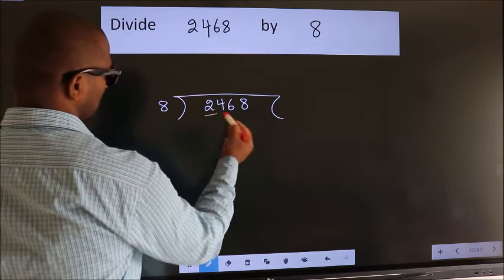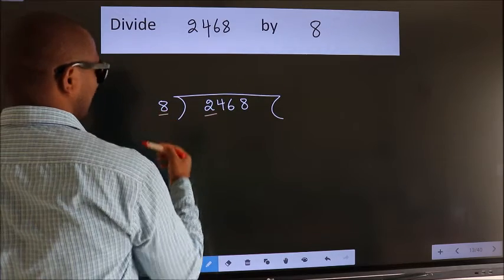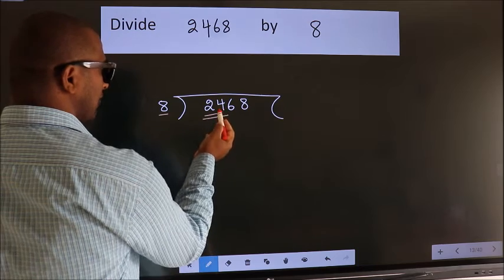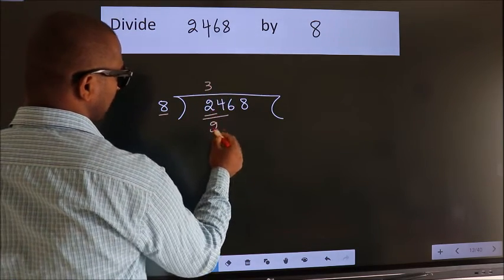Here we have 2. Here 8. 2 is smaller than 8. So, we should take 2 numbers, 24. When do we get 24 in 8 table? 8 threes, 24.